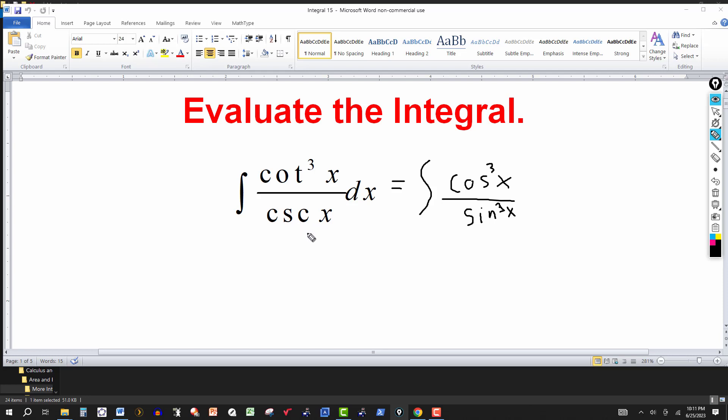And then cosecant is one over sine. So if I multiply the numerator and denominator by sine, and I have the sine of x up here, and I can reduce this down a little bit. So I've got one sine here will cancel with one here. So this would actually be a square here.